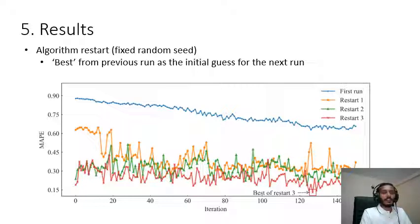In a given run, the parameter sets that produce the lowest error are considered as the initial guess for the next run. We restarted the algorithm three times and the best result was taken from restart three which produced the lowest error.